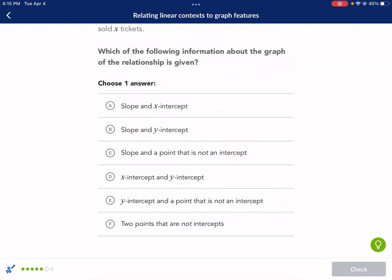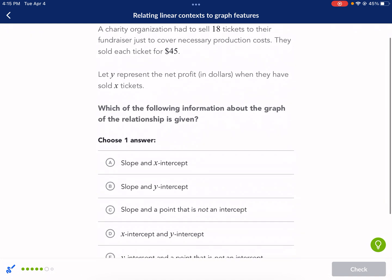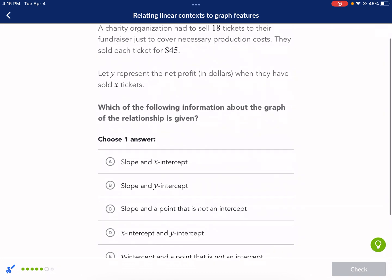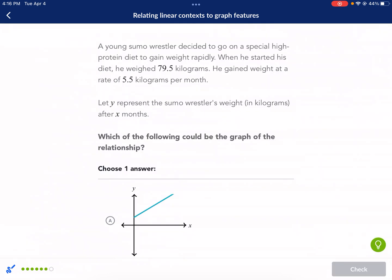Let's see what one that is. Slope and a point that is not intercept. Two points that are, let's see. Maybe I'm wrong here. They had to sell 18 tickets to their fundraiser just to cover the necessary production costs. They sold each ticket for $45. That is definitely the slope. Oh, it says right here. The first one. Slope and X-intercept. Sometimes you look too hard. There we go. Last question.